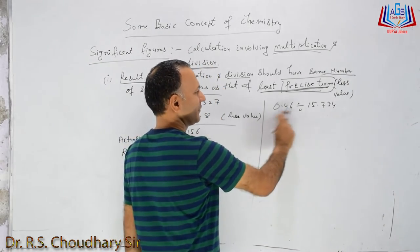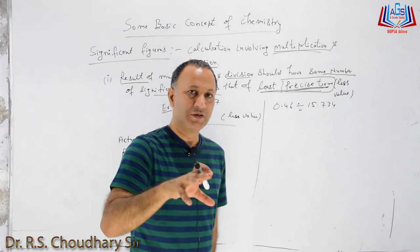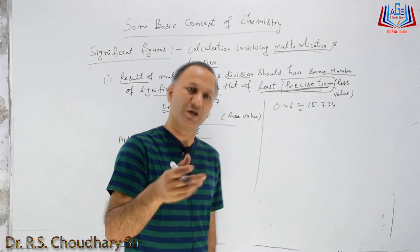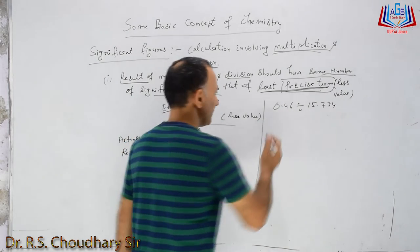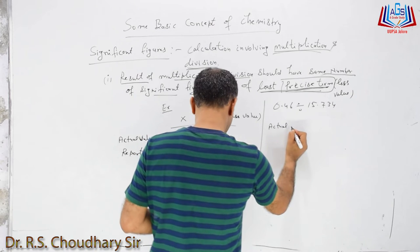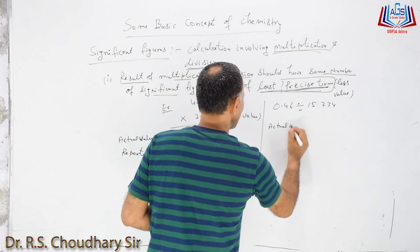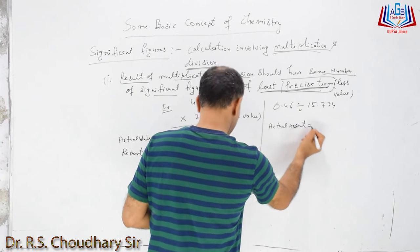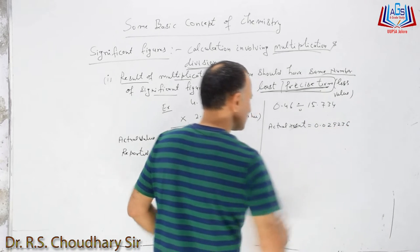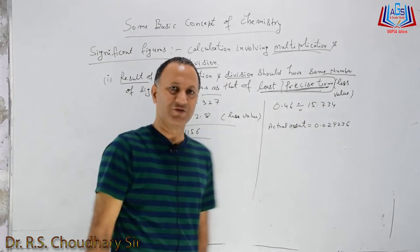How many significant figures are in the least value? 0.46 has 2 significant figures. So the final result should also have 2 significant figures. If we divide, the actual result comes out to 0.029236.